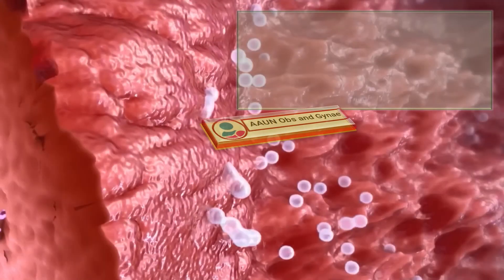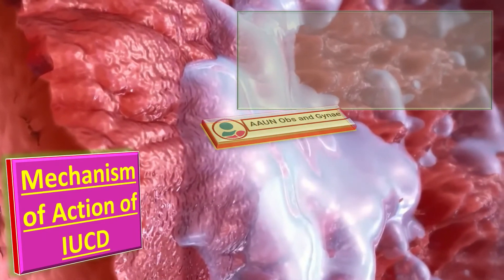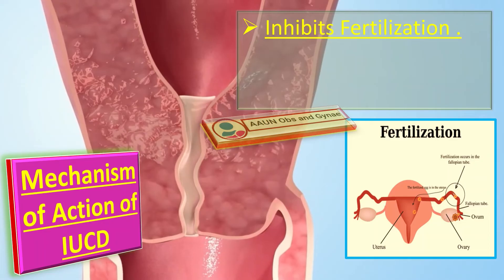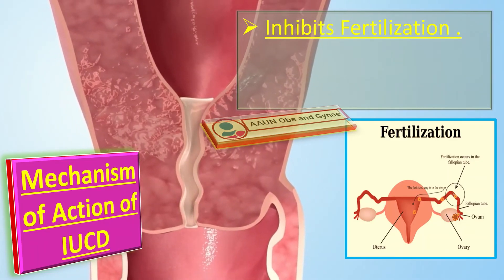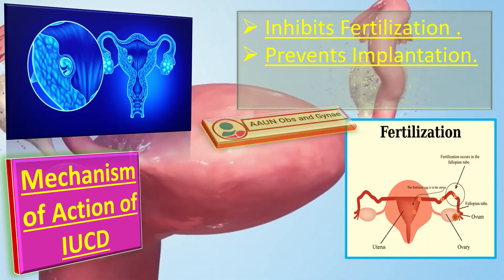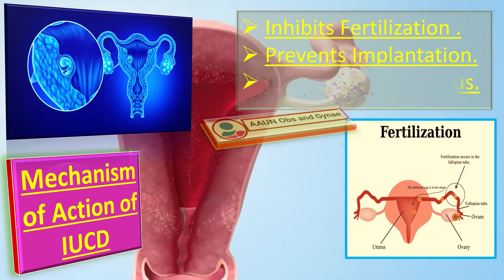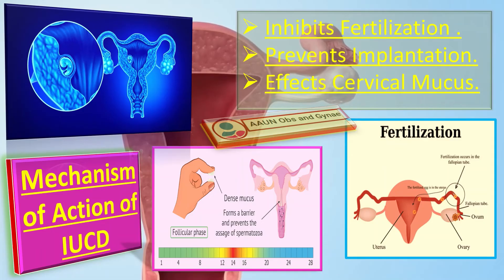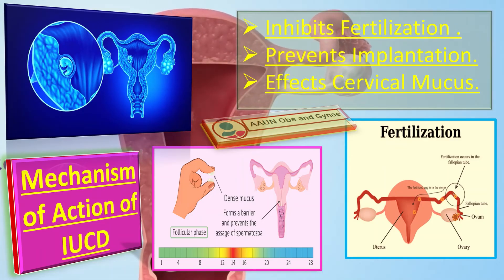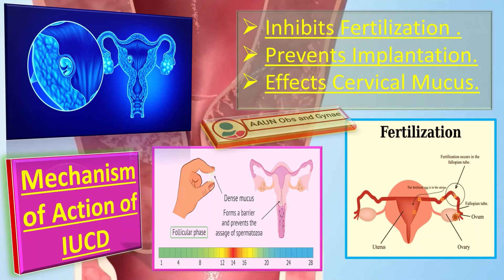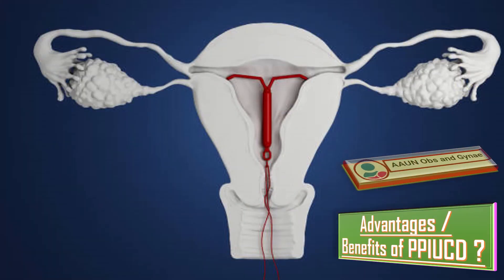The mechanism of action of PP-IUCD: it works by inhibiting fertilization through direct toxicity to sperm. An inflammatory reaction within the endometrium also has an anti-implantation effect. It affects cervical mucus — the copper is toxic to the ovum and sperms, and the copper content of cervical mucus inhibits sperm penetration. This is how PP-IUCD prevents pregnancy.